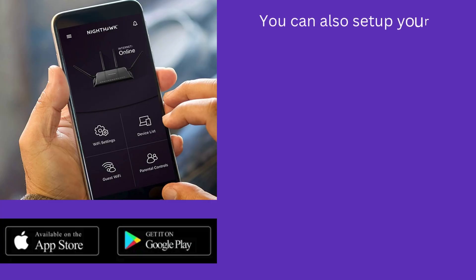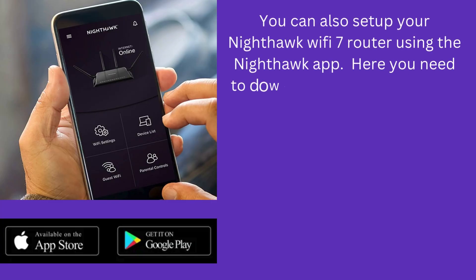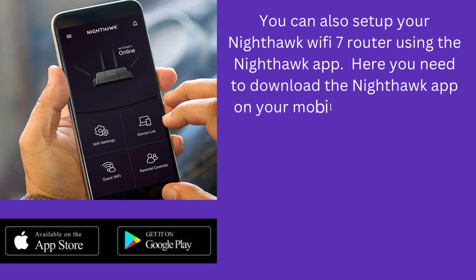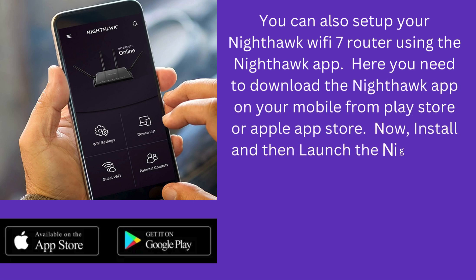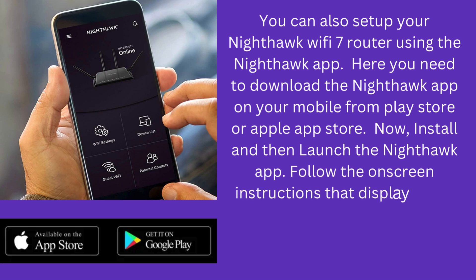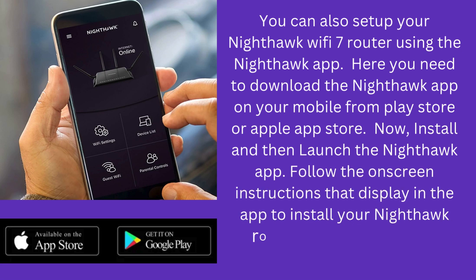You can also set up your Nighthawk Wi-Fi 7 router using the Nighthawk app. Download the Nighthawk app on your mobile from the Play Store or Apple App Store. Then install and launch the Nighthawk app. Follow the on-screen instructions displayed in the app to install your Nighthawk router and connect to the internet.